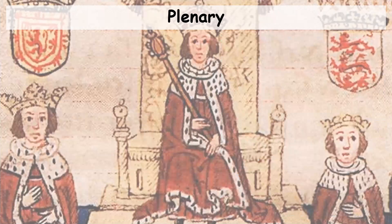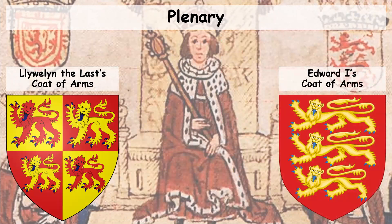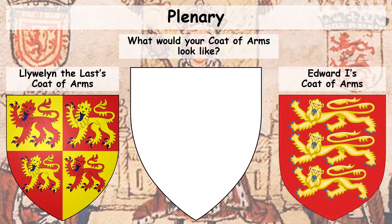Edward then captured Davyf after fighting against the marcher lordships, and Edward took control of the whole of Wales. As a final task for this lesson, here is Llewellyn's coat of arms — his shield and sign — and here is Edward I's coat of arms. What would your coat of arms look like? What animals, what shapes would you include? You can draw your coat of arms on the worksheet, in your books, or on paper. That's the final task of this lesson — thank you for listening, and I'll see you next time, Year 7.